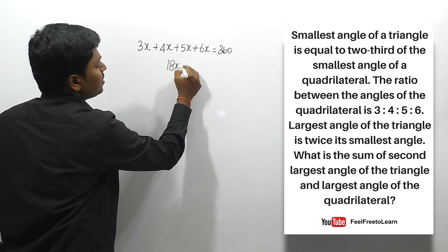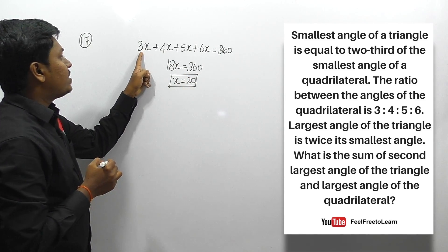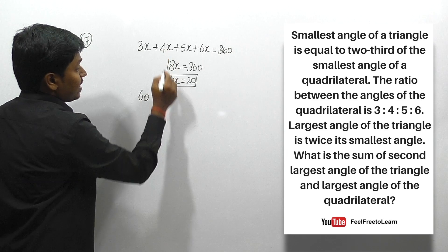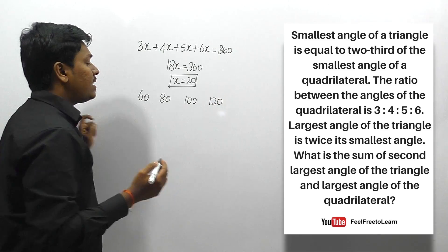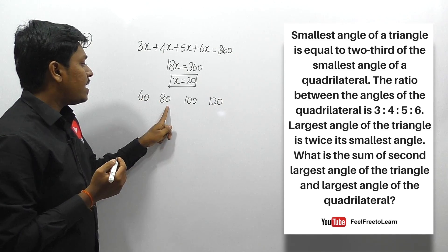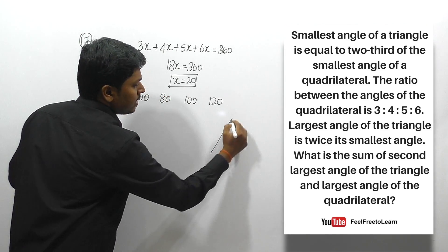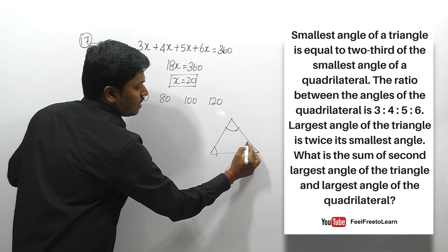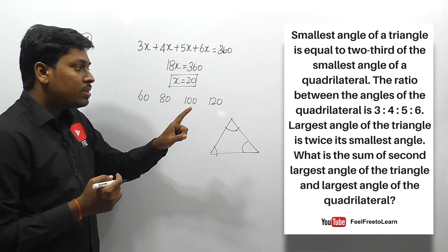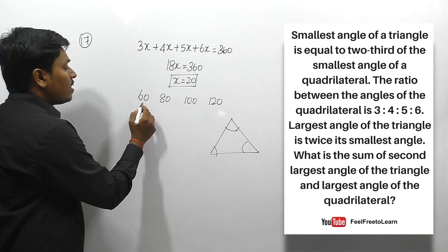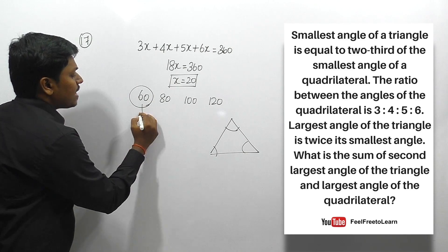So 18x = 360, giving x = 20. Substituting: 3×20 = 60, 4×20 = 80, 5×20 = 100, and 6×20 = 120 degrees are the four angles of the quadrilateral. For the triangle, the smallest angle is two-thirds of the smallest angle of the quadrilateral, which is 60. So the smallest angle of the triangle is (2/3) × 60 = 40 degrees.